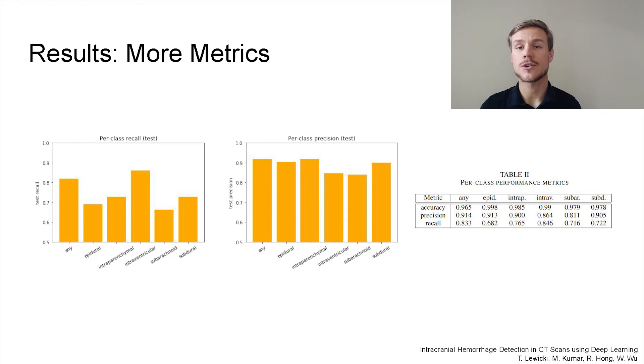Initially, we achieve an average recall of 76%, with the highest scoring class, intraventricular hemorrhage, achieving recall of 86% and the lowest scoring class, 68%. The class that performed the poorest in terms of recall was the one that had the fewest training examples, which was the expected result.